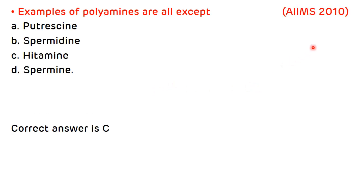Third question, asked in AIIMS 2010: examples of polyamines are all except (a) putrescine, (b) spermidine, (c) histamine, (d) spermine. The correct answer is (c) histamine. Histamine is not an example of polyamines; it is an example of biogenic amines, while the other three are examples of polyamines.